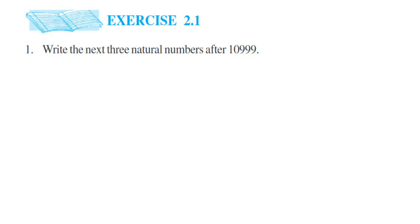Hello everyone, here I am doing a question on Exercise 2.1, Whole Numbers, Class 6. The first question is: write the next three natural numbers after 10,999. Next three natural numbers means they're asking us to write the next three consecutive natural numbers.